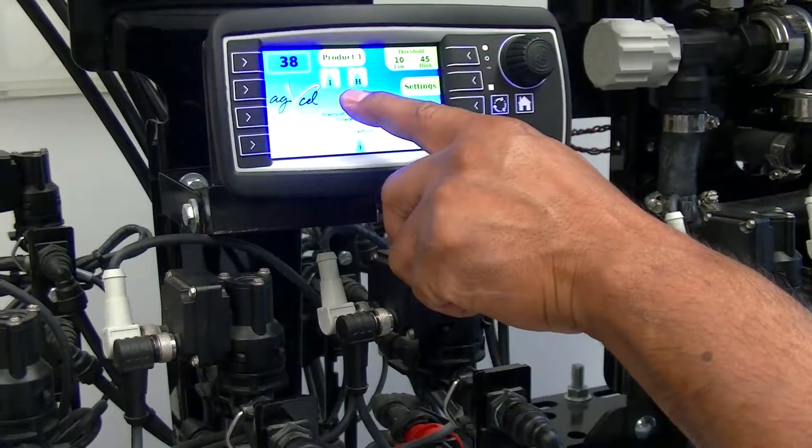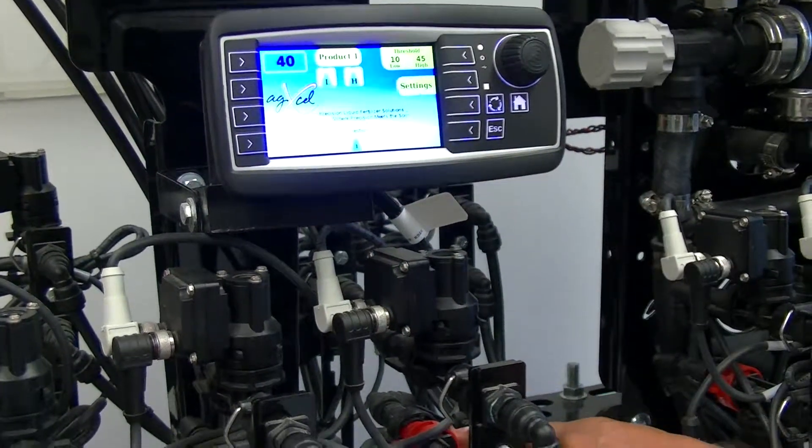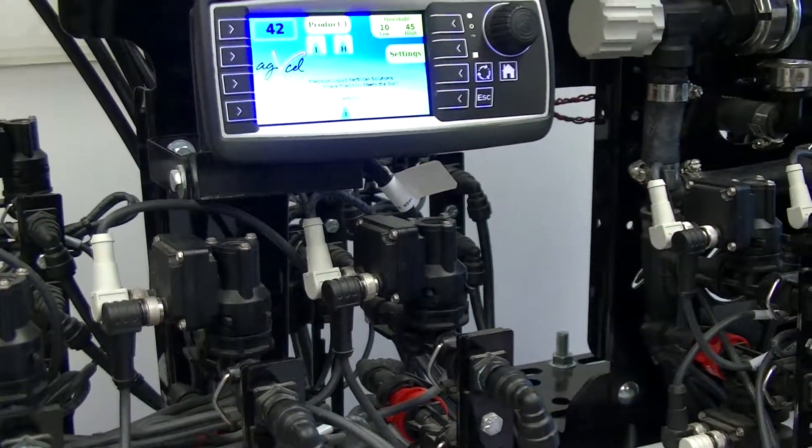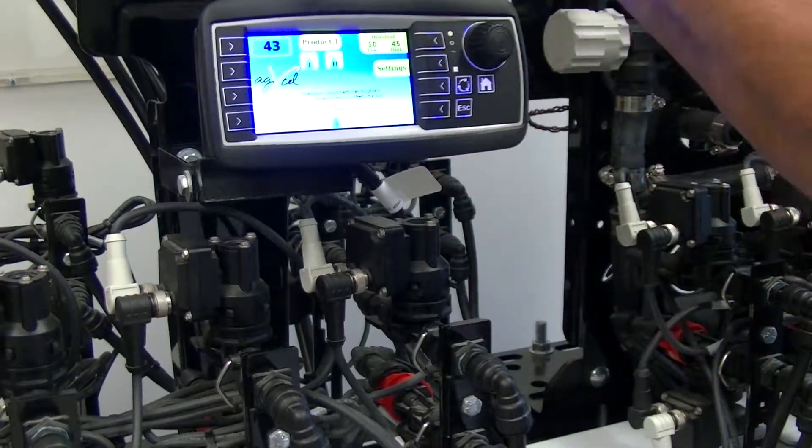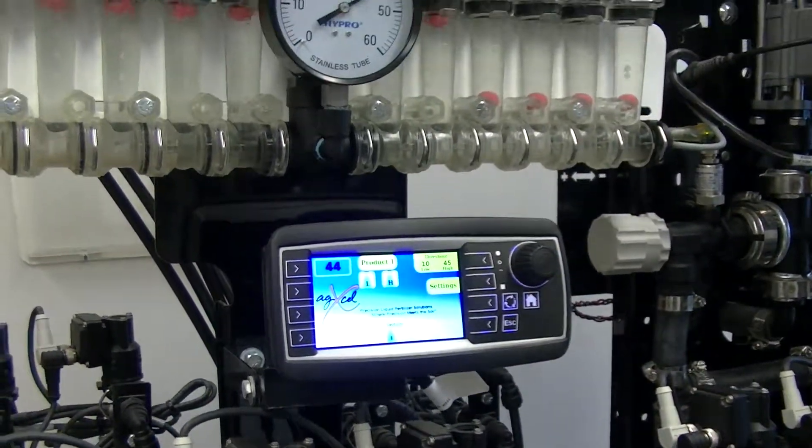Once it reads 45, now both sides are open and I'm able to achieve a higher rate up to 20 gallons per acre. I'm still only at 44 PSI.